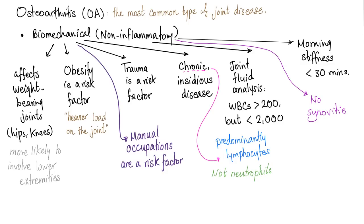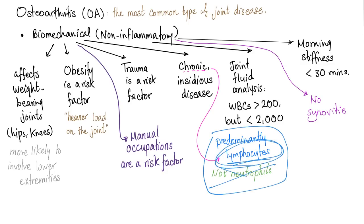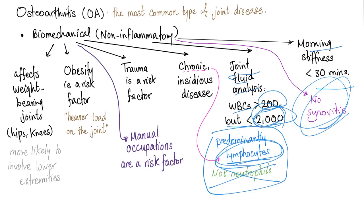Because it's chronic, if you find white blood cells in the knee joint, they are predominantly lymphocytes, not neutrophils. Joint fluid analysis shows white blood cells more than 200 but less than 2,000 — still non-inflammatory. Morning stiffness lasts less than 30 minutes. There is no synovitis because there is no systemic inflammation of any kind.